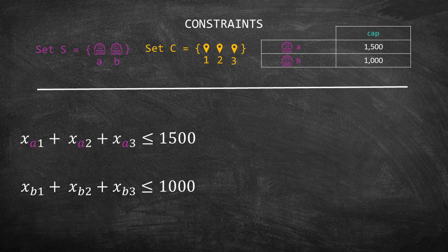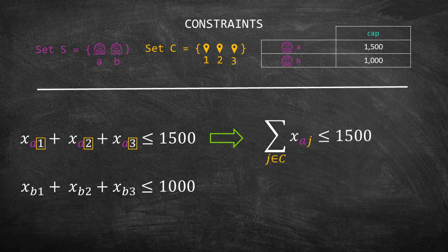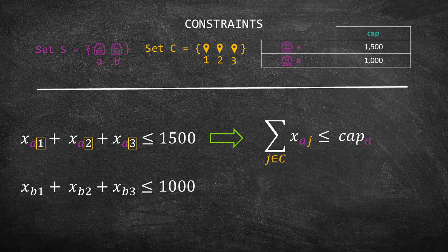XA1 plus XA2 plus XA3. Notice that the first index is always the letter A. Then, we combine supplier A with each one of the customers, as you see in the yellow squares. We can rewrite this equation as the sum of J in the set of customers C of XAJ, which is less than or equal 1,500. We can also replace 1,500 for CAP index A.